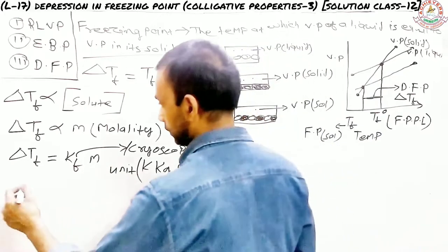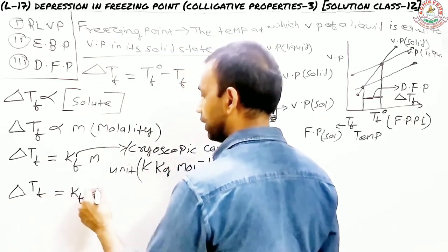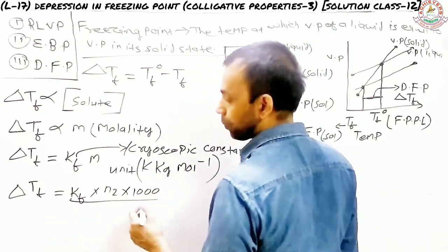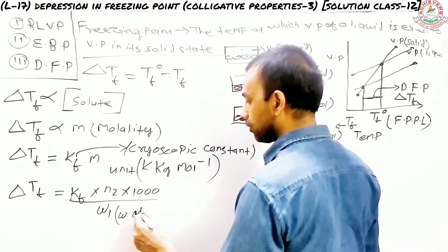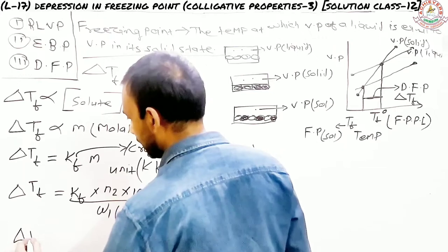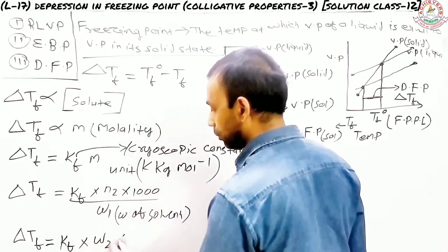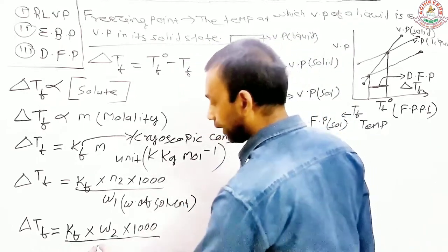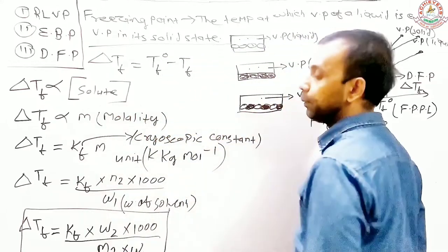So ΔTf equals Kf multiplied by molality, which is the number of moles of solute divided by the weight of the solvent in kg. Expanding this: ΔTf = Kf × (W2 × 1000) / (M2 × W1), where W2 is the given mass of the solute, 1000 is the conversion factor from grams to kilograms for the solvent, M2 is the molar mass of the solute, and W1 is the given mass of the solvent. This is the formula for depression in freezing point.